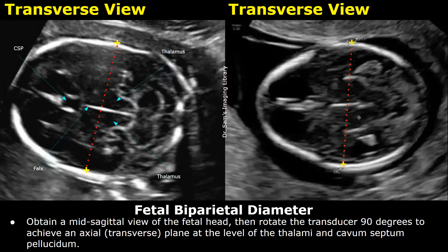BPD is one of the biometric parameters used to estimate the fetal weight and gestational age. First, you locate the fetal head and obtain a parasagittal view of the fetal head, then rotate the probe 90 degrees to scan in an axial or transverse plane.